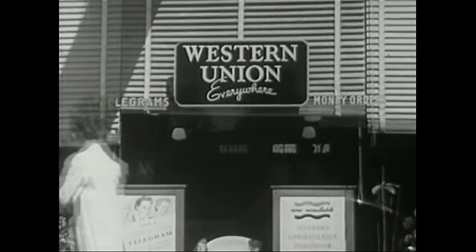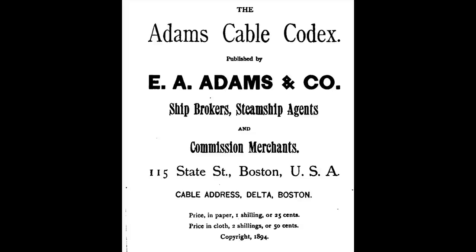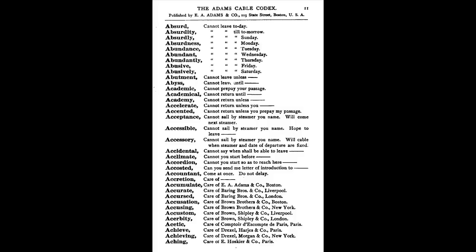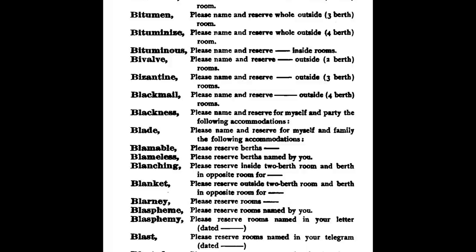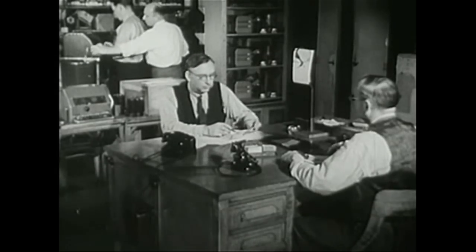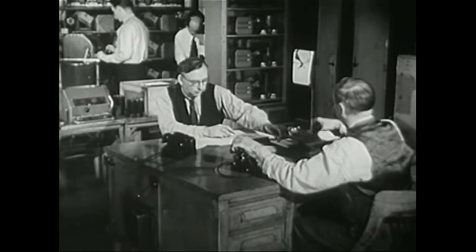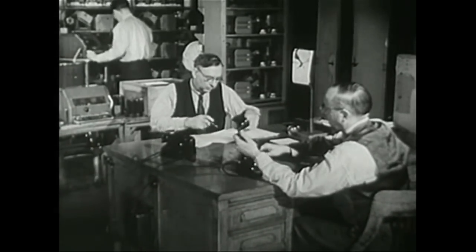As people began using this system, they naturally thought of ways to save money. This led to popular code books that mapped words to common sentences. For example, blade would actually mean, please name and reserve for myself and family the following accommodations. The telegraph companies frowned upon this as they were happily charging people to be verbose. More letters equals more profit.